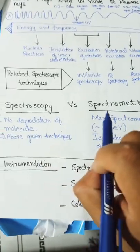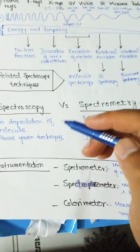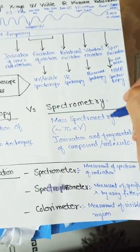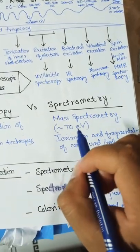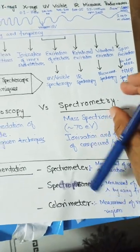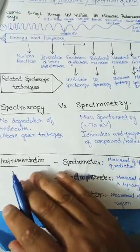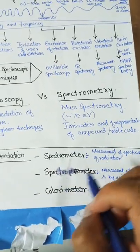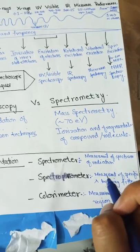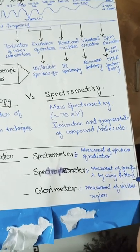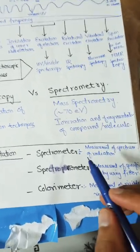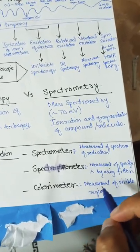The difference between spectroscopy and spectrometry: in spectroscopy — such as UV-visible, IR, microwave, and NMR — there is no degradation of the molecules. In spectrometry, like mass spectrometry, approximately 70 electron volts of radiation causes ionization and fragmentation of the compounds. A spectrometer measures the spectrum of radiation, while a spectrophotometer measures the interaction of a specific wavelength with the compound using filters. Colorimetry measures only the visible region.